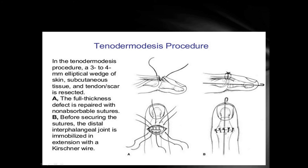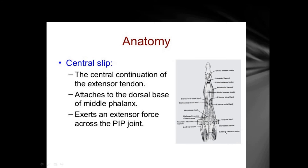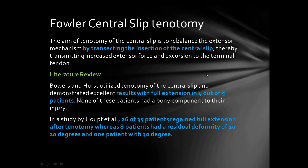Before Fowler central slip tenotomy: the central slip is the central continuation of the extensor tendon, attached to the dorsal base of the middle phalanx, exerting an extensor force across the proximal interphalangeal joint. Its function is to extend the proximal interphalangeal joint, while the lateral bands extend the distal interphalangeal joint. In Fowler central slip tenotomy, the insertion of the central slip is transected, thereby transmitting increased extension force and excursion to the terminal tendon.